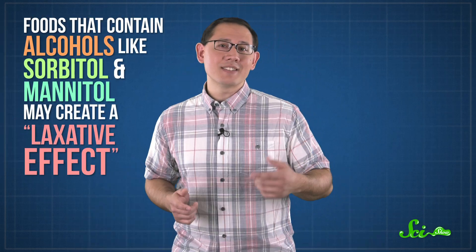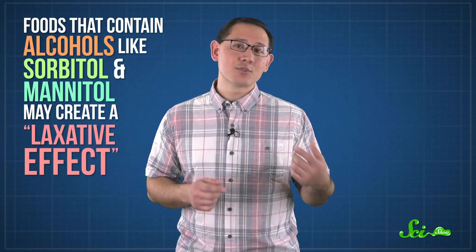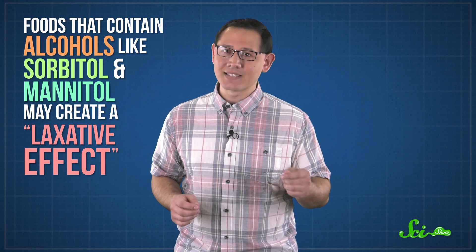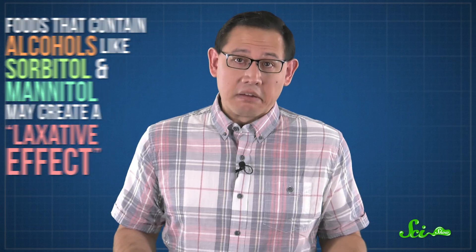Sugar alcohols do have their downsides, though. Erythritol is excreted mostly through your urine—you just pee it out. But other kinds of sugar alcohols make it all the way through your intestines without being completely absorbed, and have to come out as the other kind of waste. Which is why foods that contain alcohols like sorbitol and mannitol warn you on their labels that they may create a laxative effect. So maybe you can have your cake and eat it too. It just might give you a little diarrhea.